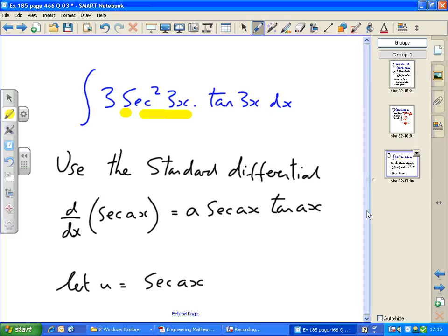So let u equal sec ax this time. So then you can differentiate it using this standard differential. Make the substitution. You should find that tan 3x cancels out. And then you get the answer in the textbook. I'll leave you to have a go at that part of the problem.